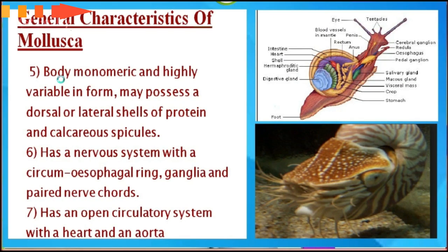The body is monomeric and highly variable in form. It may possess a dorsal or lateral shell of proteins and calcareous spicules. It has a nervous system with a circum-esophageal ring, ganglia, and paired nerve cords. It also has an open circulatory system with a heart and an aorta.